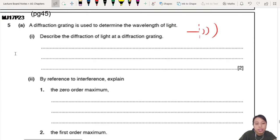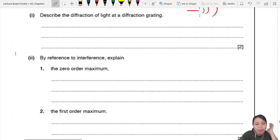By reference to interference, explain the zero order maximum. Hey, this is the same exact question. These three parts are the same. Wow, it's very popular or they like to ask this, so you better know how to describe.